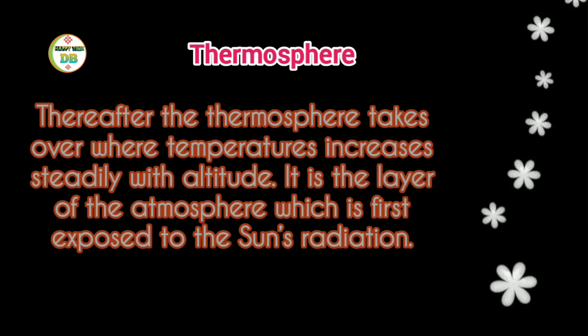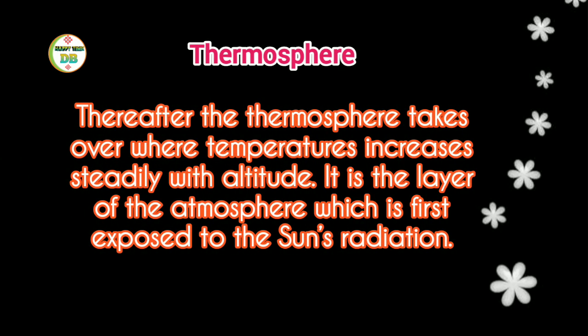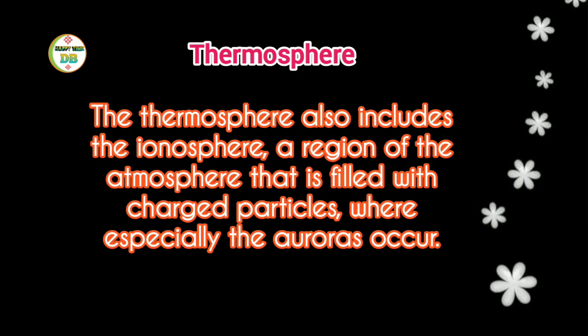Thereafter, the thermosphere takes over, where temperatures increase steadily with altitude. It is the layer of the atmosphere which is first exposed to the sun's radiation. The thermosphere also includes the ionosphere, a region of the atmosphere that is filled with charged particles, where especially the aurora occurs.